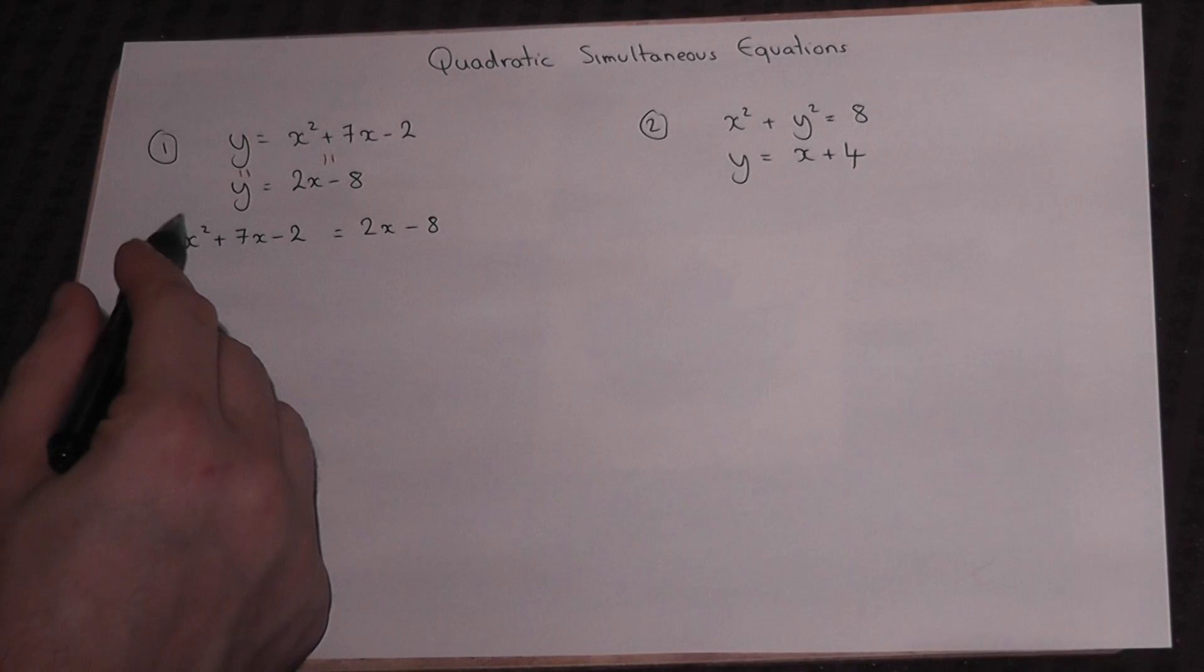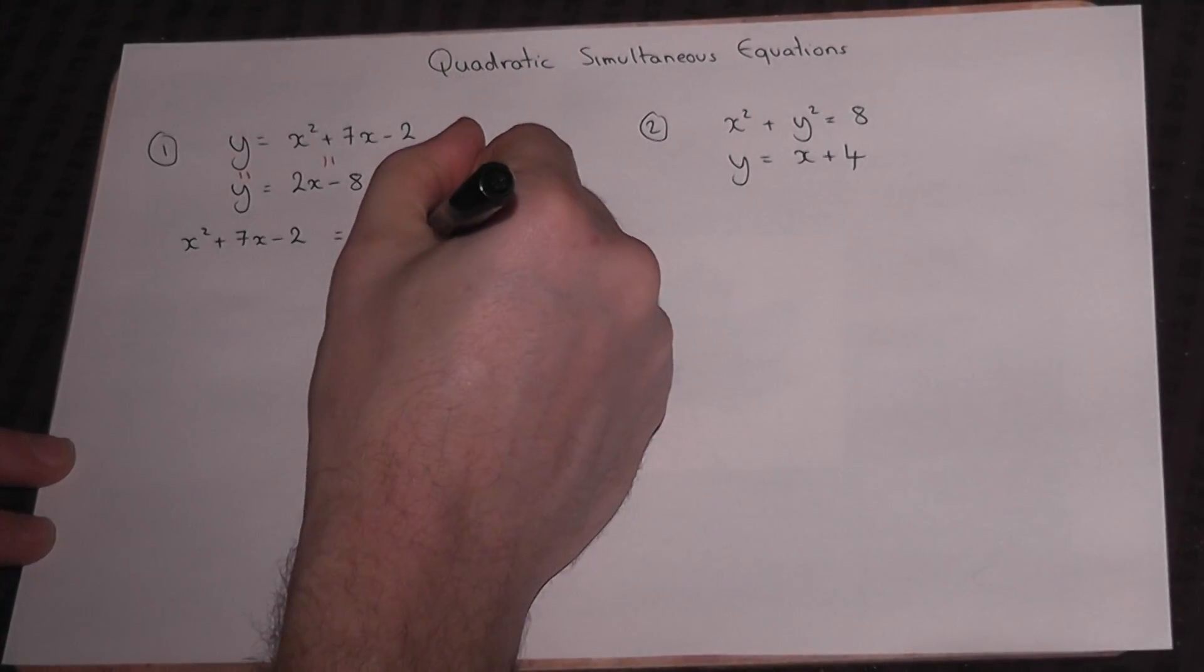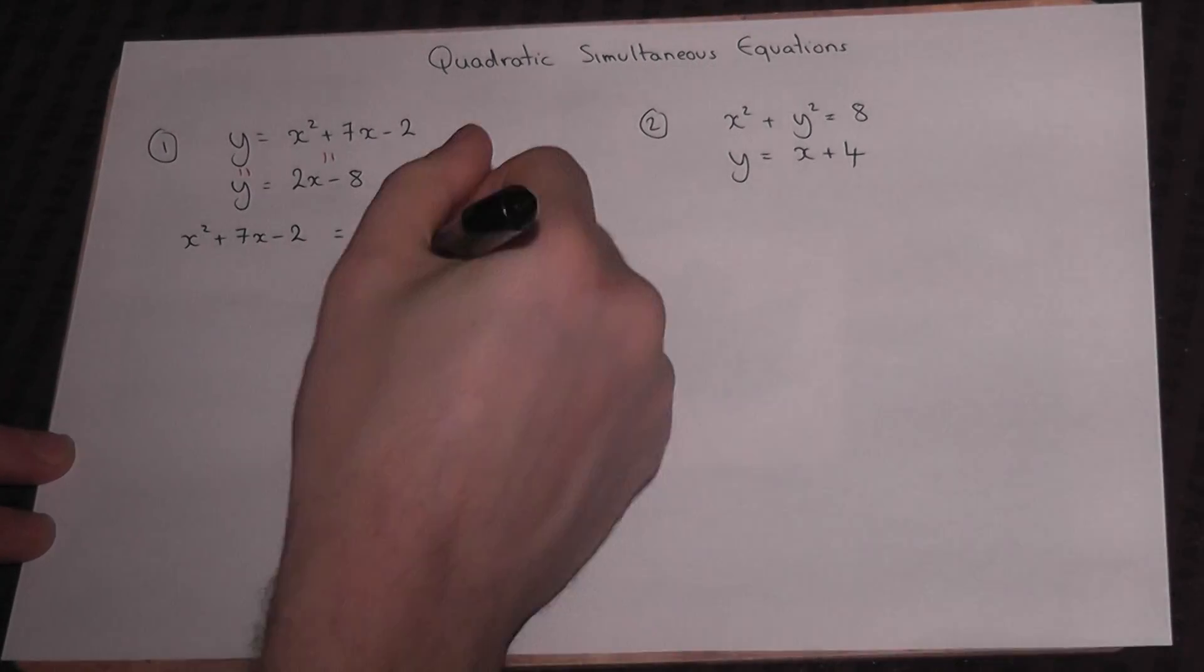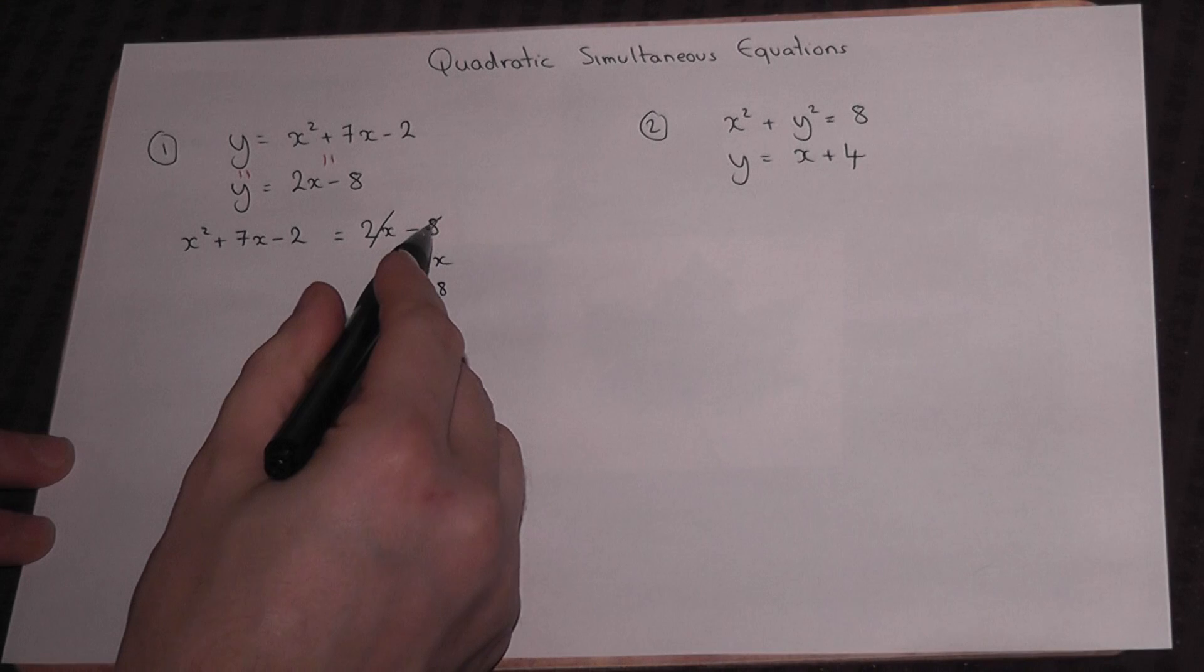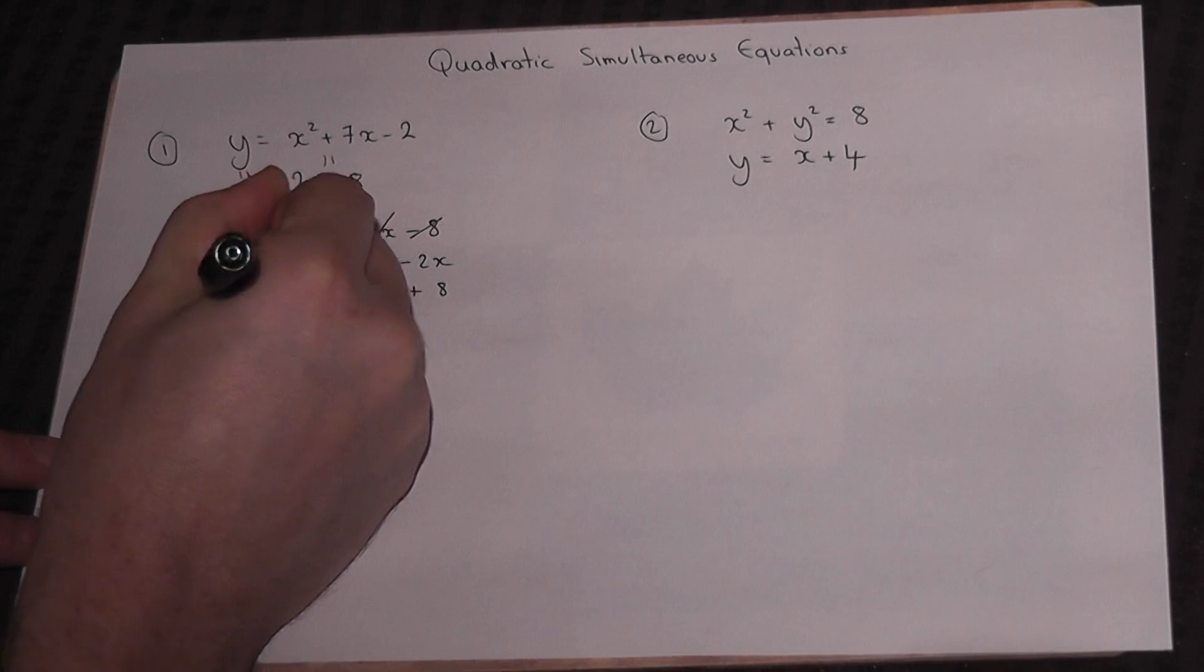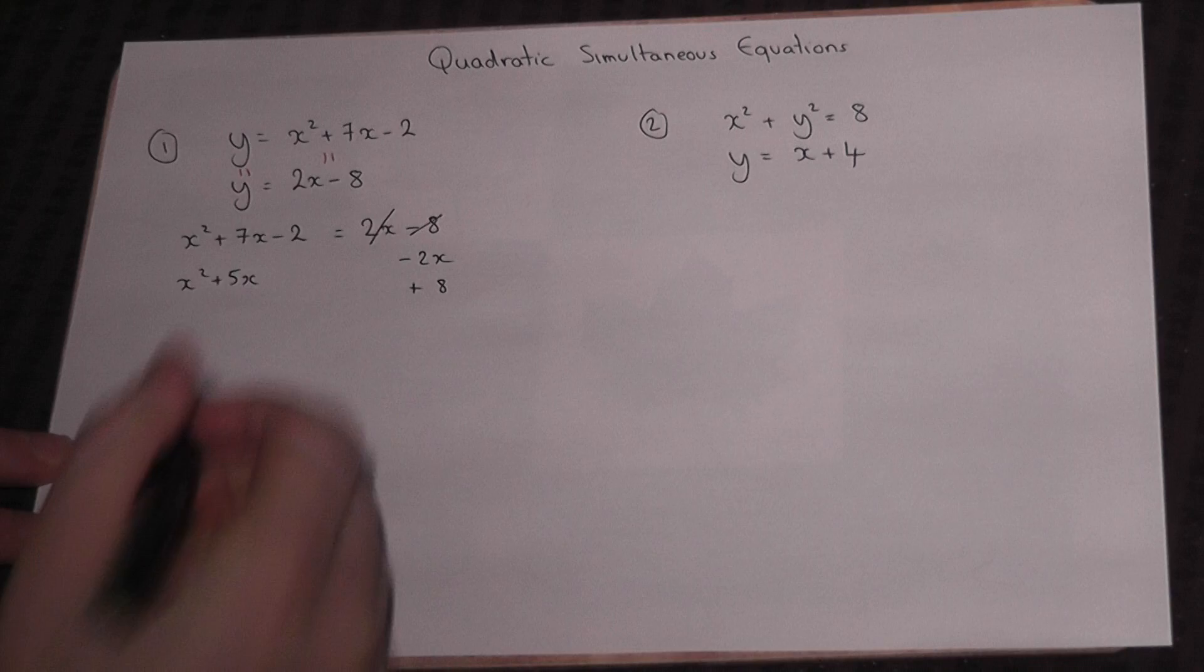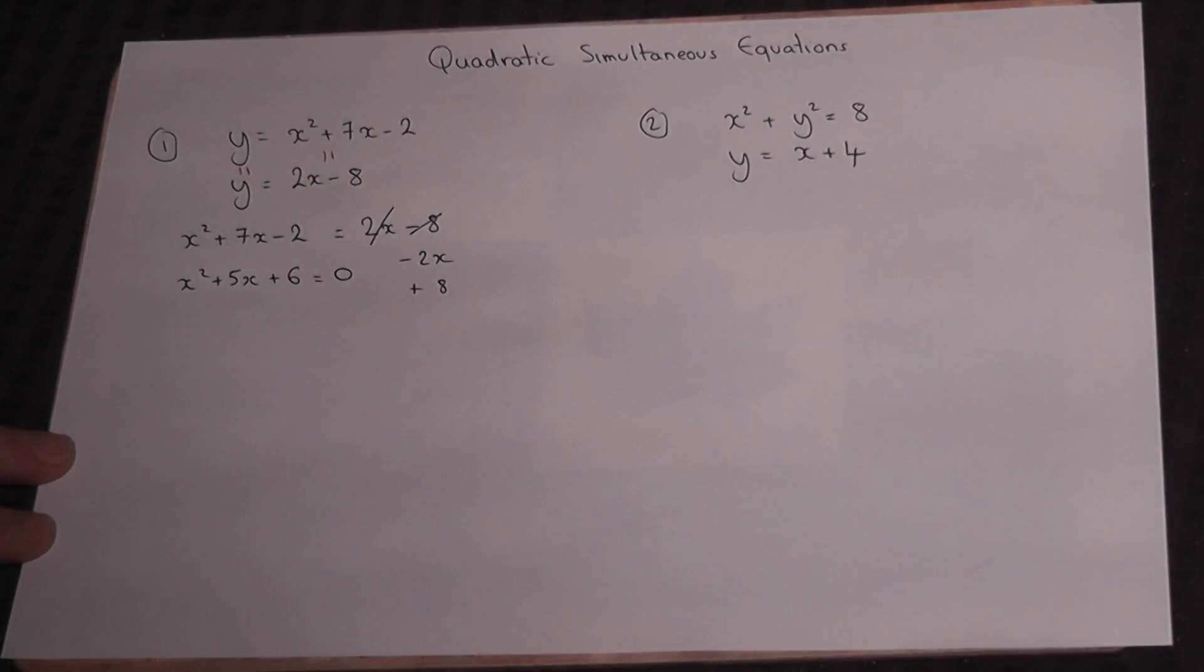The x² terms are on the left, so I want to get rid of the 2x by taking away 2x, and get rid of the minus 8 by adding 8. What I do to the right hand side I must do to the left hand side. If I take away 2x I get 5x, and if I add 8 this becomes plus 6, and the right hand side is left as equal to 0.